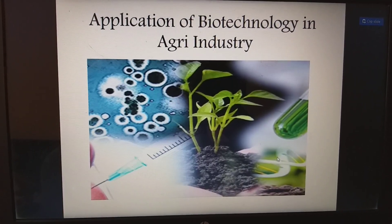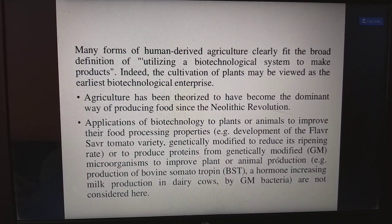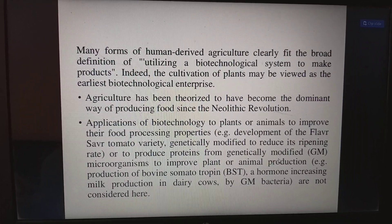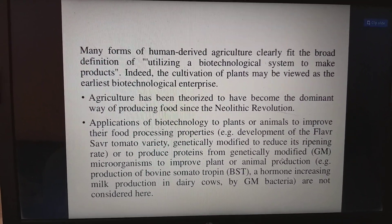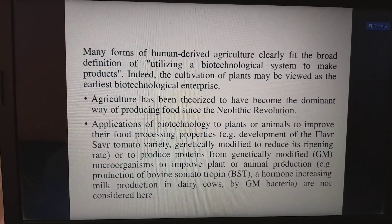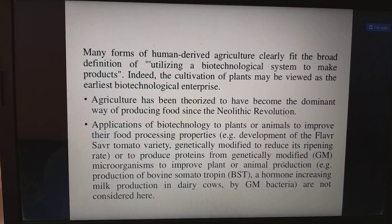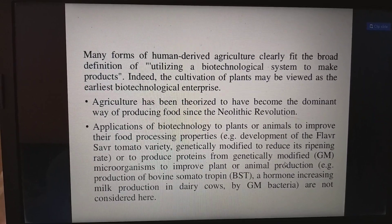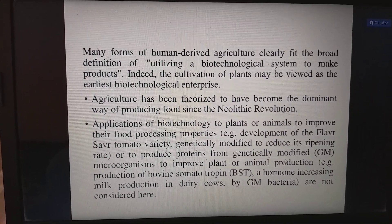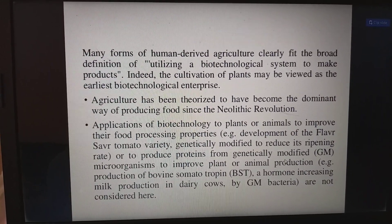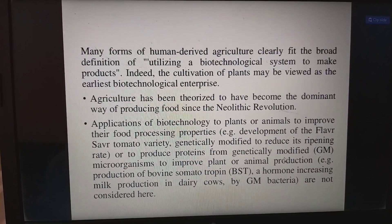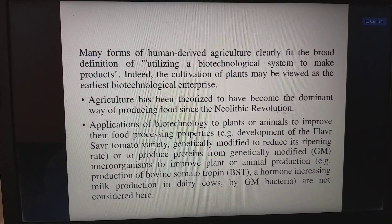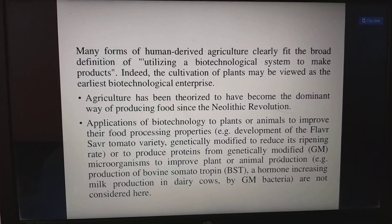Regarding applications of biotechnology in the agriculture industry, many forms of human-derived agricultural practices fit the broad definition of utilizing a biotechnological system to make products. The cultivation of plants may be viewed as the earliest biotechnological enterprise. Agriculture has theorized to have become the dominant way of producing food since the Neolithic revolution. Biotechnology is applied to plants or animals to improve their food processing properties — for example, development of the Flavr Savr tomato variety, genetically modified to reduce its ripening rate, or producing proteins from genetically modified microorganisms to improve plant or animal production.